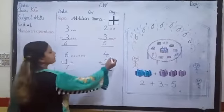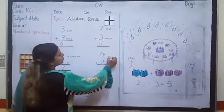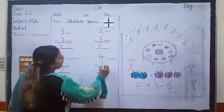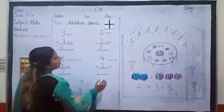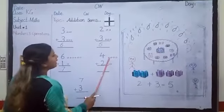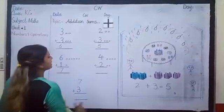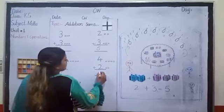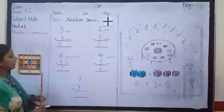Okay, now look at the next sum. Which number is this? Yes, four. So we have drawn four circles. And this is number two. Very good students. Okay, now count with me — how many total circles are there? One, two, three, four, five, six. If we add two in four, it equals six. The answer is six.